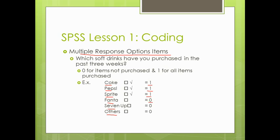Therefore, we code zero for Fanta, zero for 7-Up, and zero for others. So in this situation, code number one represents the items that the respondent purchased, and code zero represents the items that the respondent did not purchase.